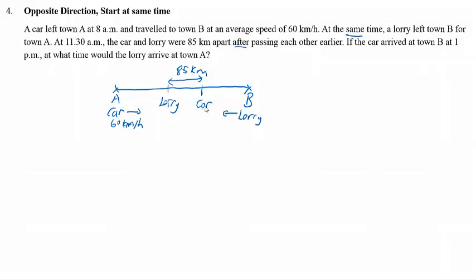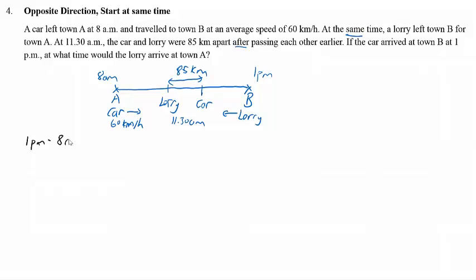The lorry is still moving to the left and the car is still moving to the right. The time here is 11:30 AM. The question also says that the car arrived at Town B at 1 PM. So the car set off at 8 AM and the car reached Town B at 1 PM. We can find the time taken — 1 PM minus 8 AM gives a total of 5 hours.